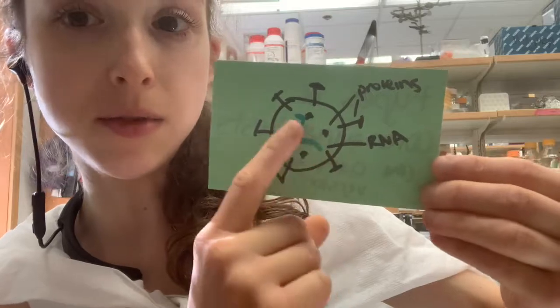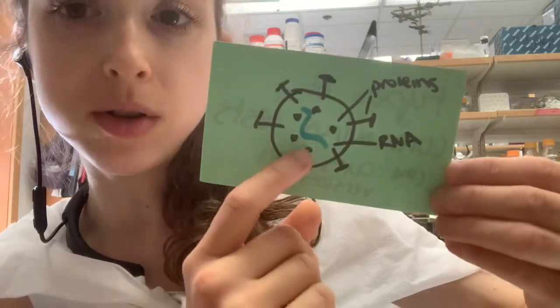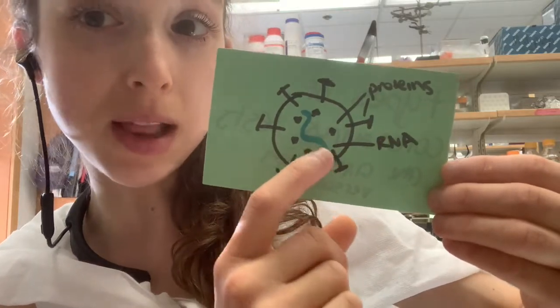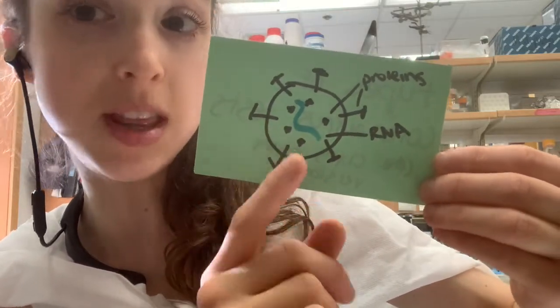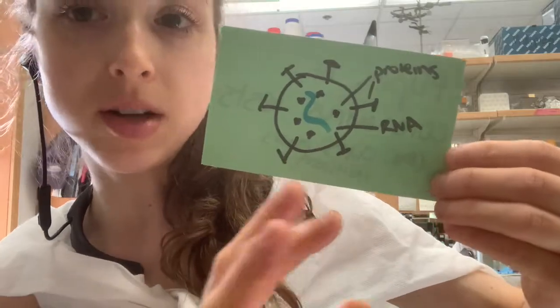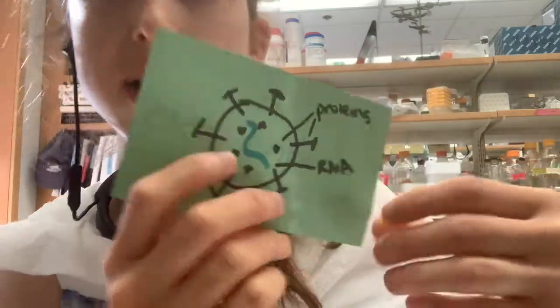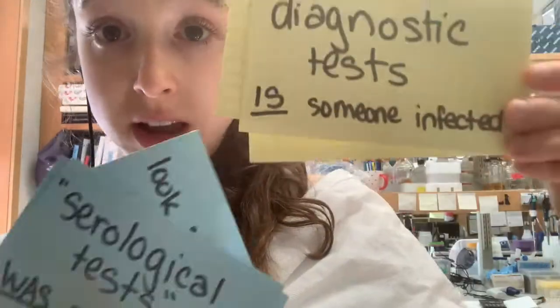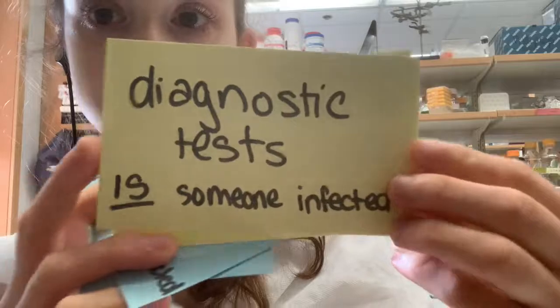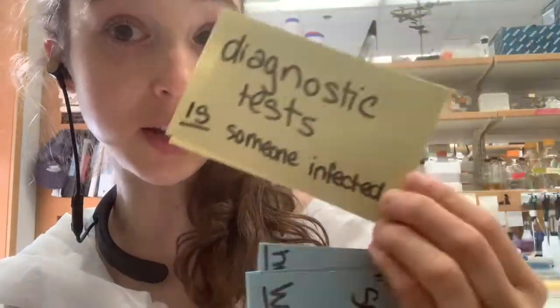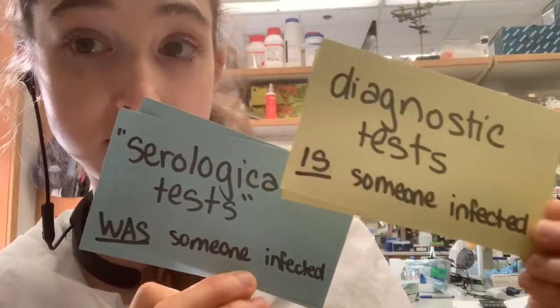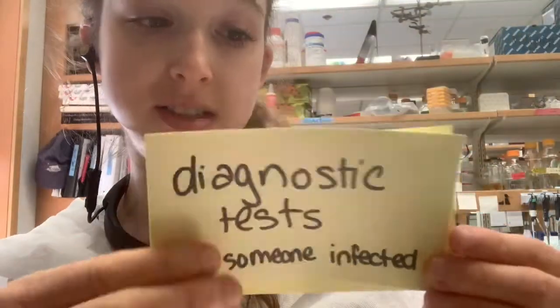If you want to detect the presence of the virus, you can look for the viral genetic information — the RNA — or you can look for the proteins. The way we look for the RNA is with molecular tests, and the way we look for the proteins is with antigen tests. It's important at this point to make a distinction between diagnostic tests, which ask 'is someone currently infected,' and serological tests, which ask 'was someone infected.'